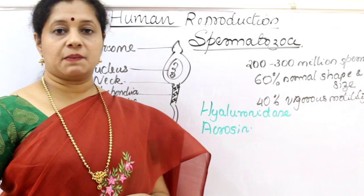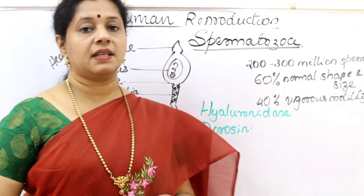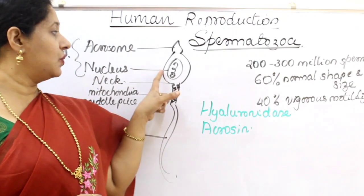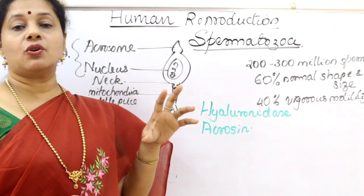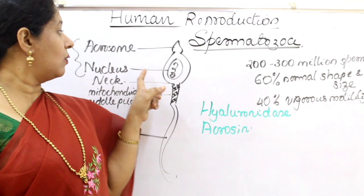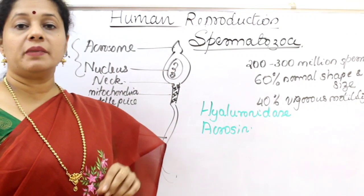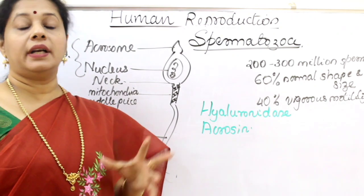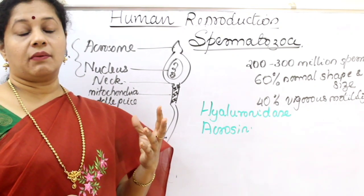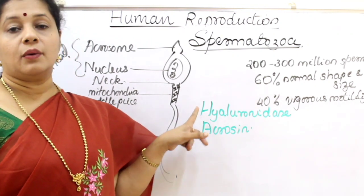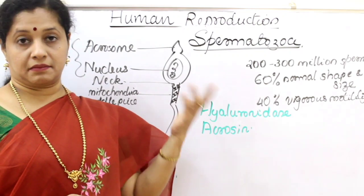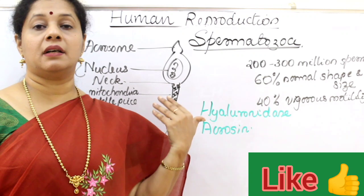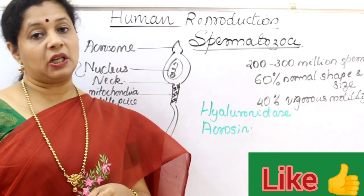Now coming to the structure of sperm. Sperm has different parts. The first part is the head region. The head consists of a nucleus, which contains the chromosome content of the male, and also the acrosome. The acrosome is a proteolytic enzyme-filled structure containing different enzymes — one example is hyaluronidase, which helps in penetrating the ovum, and acrosin, which helps in penetrating the zona pellucida layer.